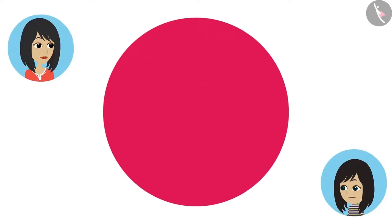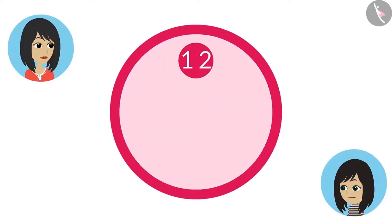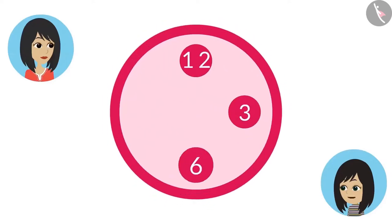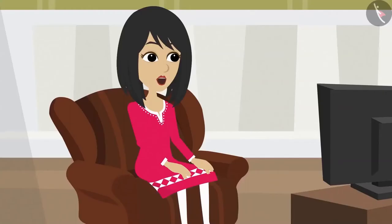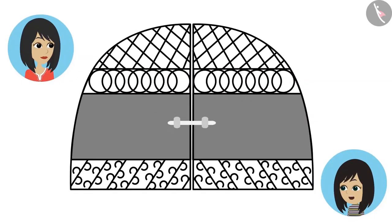Yes, Mommy. Look — one, two, three, four, five, six. Let's see what's next in your list. Next is the design on the gate of our house. Yes, there are many rounds made on it.